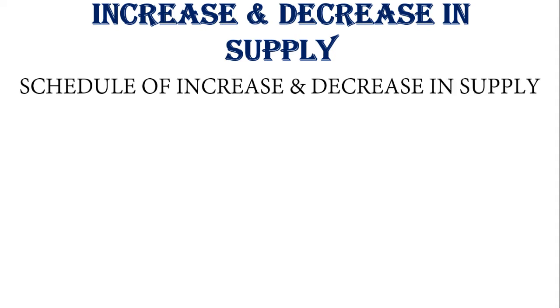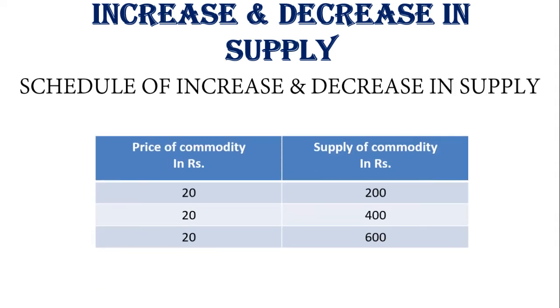Let us see this question in detail. First, you have to see the schedule of increase and decrease in supply. It is just a schedule where at different prices the supplier is ready to supply a commodity. I have taken random numbers — 20 is the price, and 200, 400, 600 are the quantities. You can take any numbers, but whatever figures you take, you have to write them in the diagram.